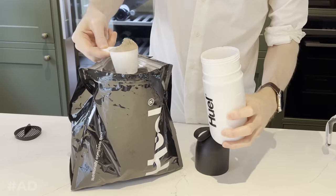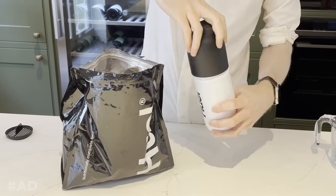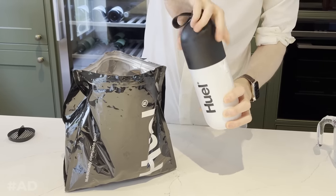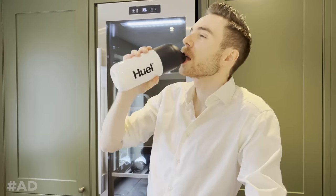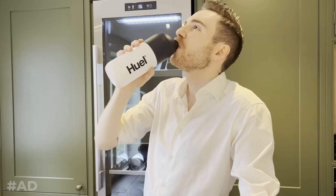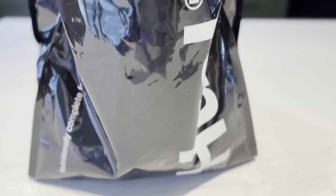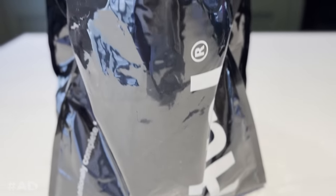To make a Huel shake, I simply add 500ml of water to my Huel shaker bottle, add two scoops of Huel powder, and give it a good shake. My favorite is the Black Edition cookies and cream. I can't believe this stuff is actually good for me, because it's so rich and chocolatey, with a hint of cookies and cream.